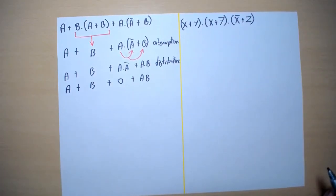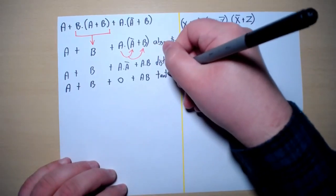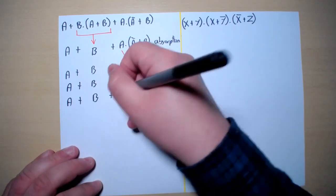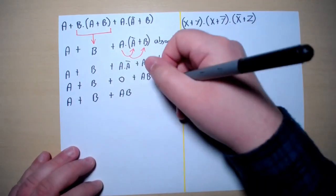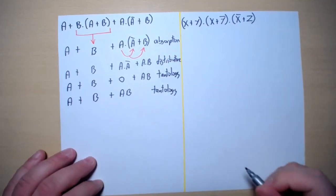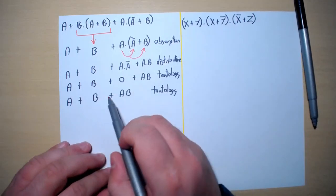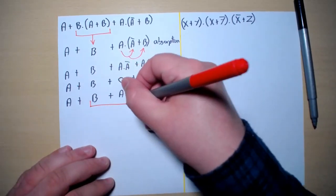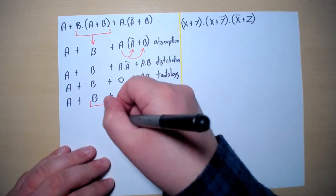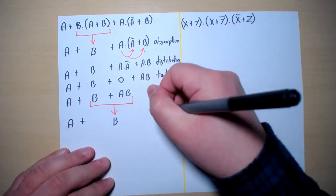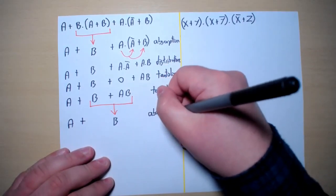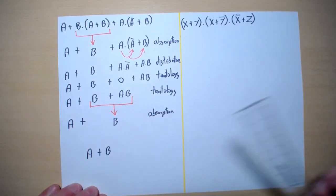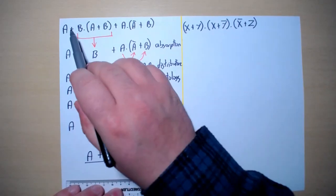Using tautology again we can get rid of that zero to get A or B or AB. Now using the absorption law, B or AB gives us B. Therefore this gives us A or B. The final answer is A or B — this complex boolean expression is equivalent to A or B.